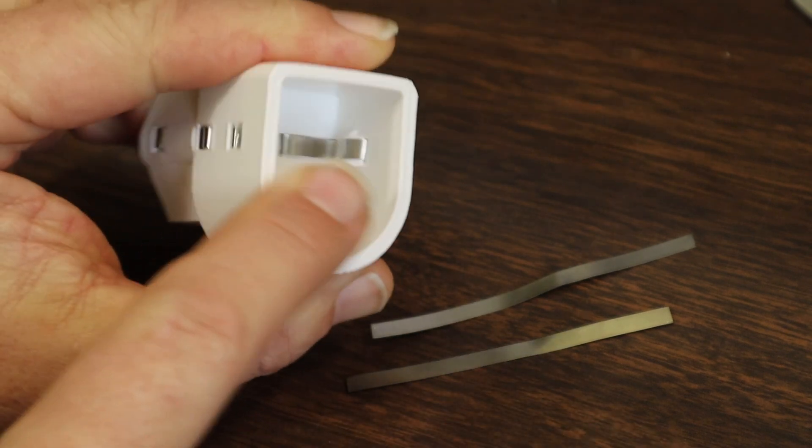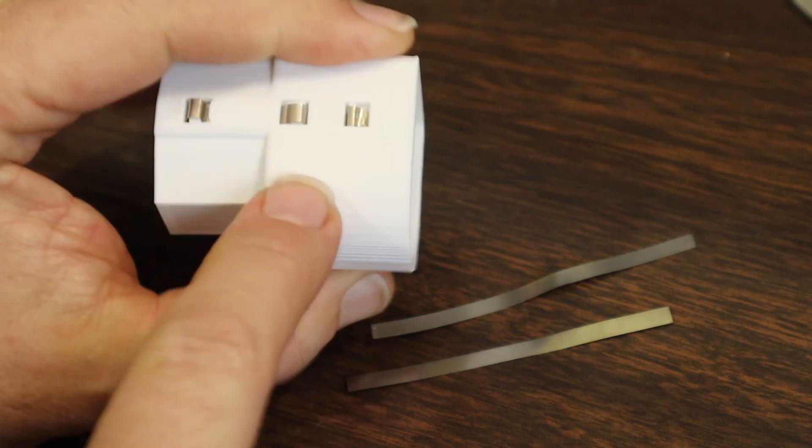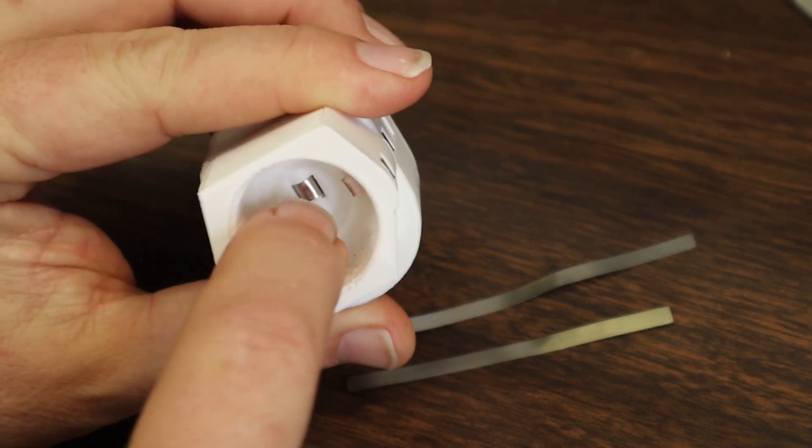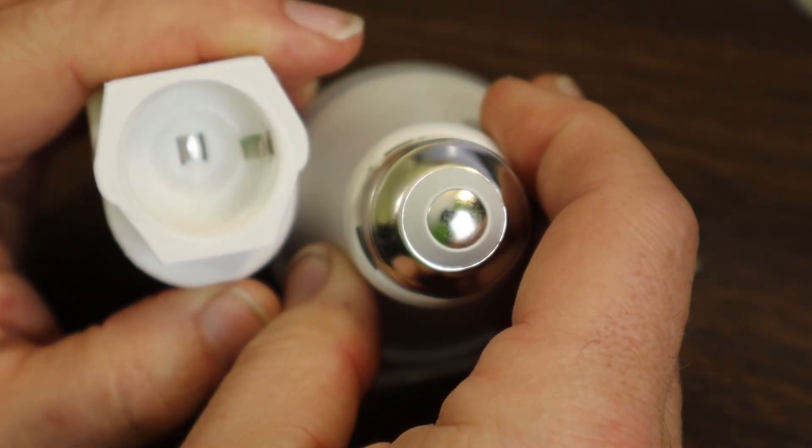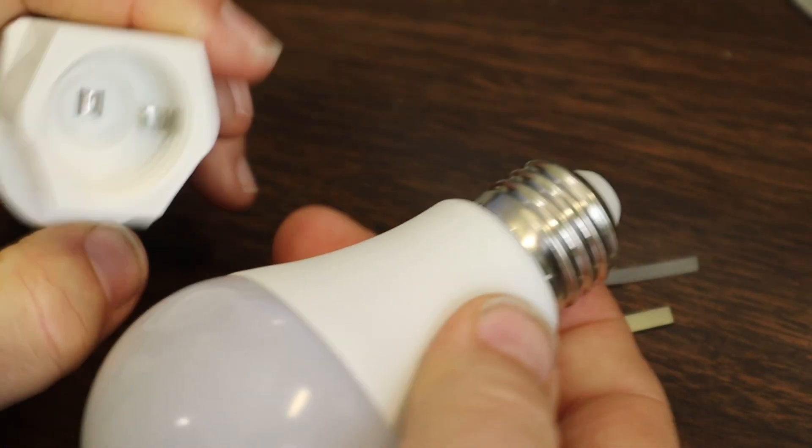It has these little bumps that go directly to the terminals on the battery. And then for the light bulb, a little bump right in the middle for the tip of the light bulb, and then some of the material on the side for the side of the light bulb.